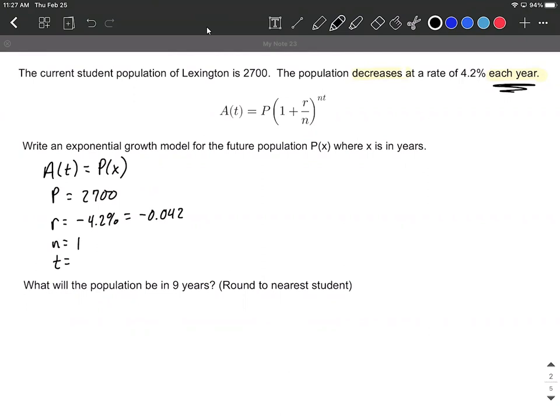And they also changed our variable instead of T being time, they told us X is in years. So X is going to go in for T in this formula.